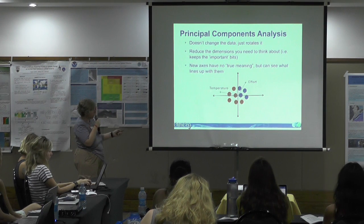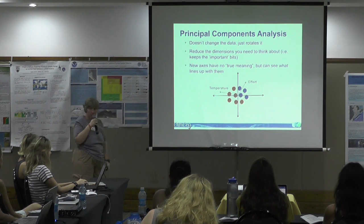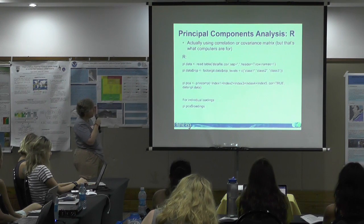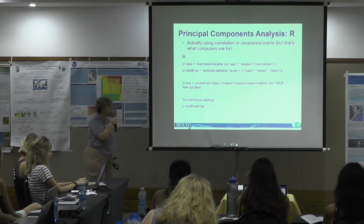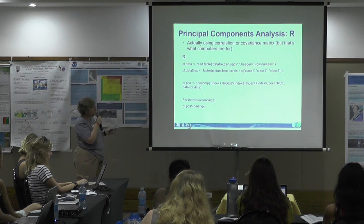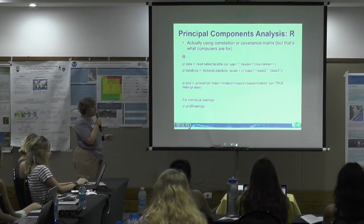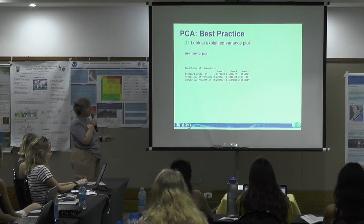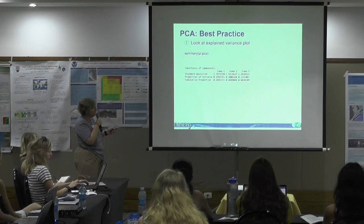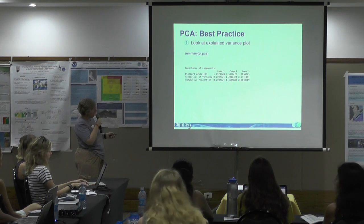For instance, temperature might be what's determining one group, while effort applied to the fishing line might be determining another. Again, it's a very simple process to do PCA in R: you read your data, apply factoring, run the principal components, and get your individual loadings. It's important to look at the loadings to see what proportion of the variance is being covered cumulatively.